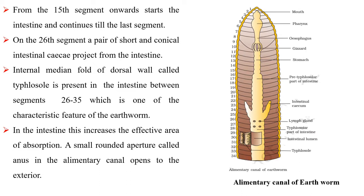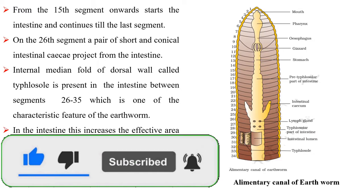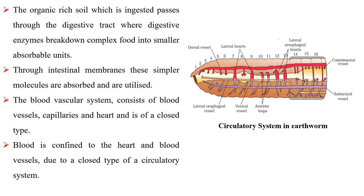In the intestine, this increases the effective area of absorption. A small rounded aperture called anus at the end of the alimentary canal opens to the exterior. The organic-rich soil which is ingested passes through the digestive tract where digestive enzymes break down complex food into smaller absorbable units.